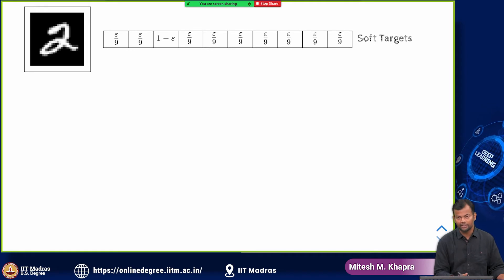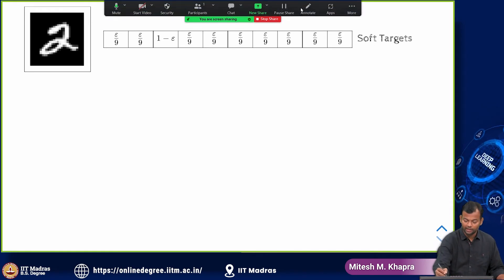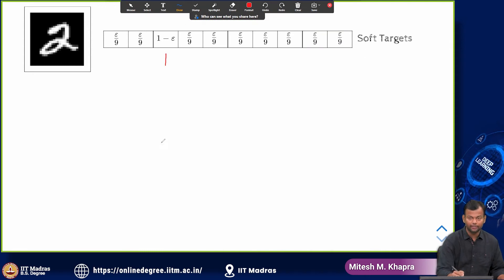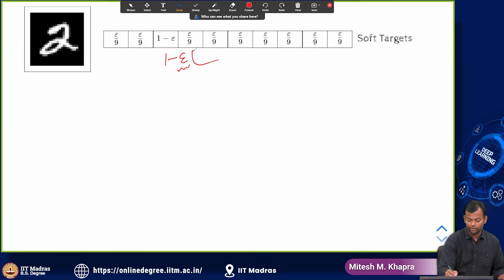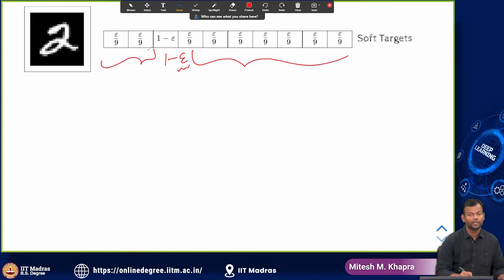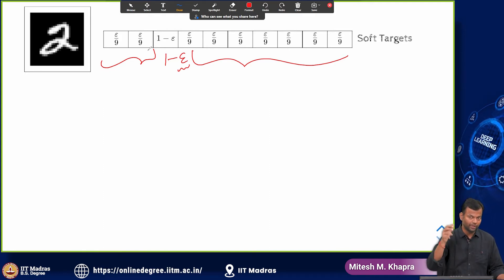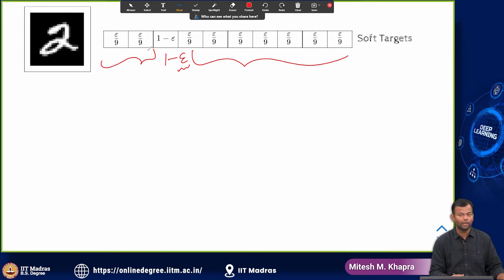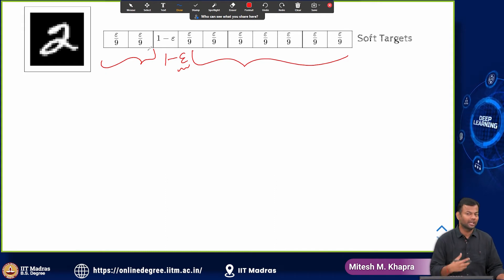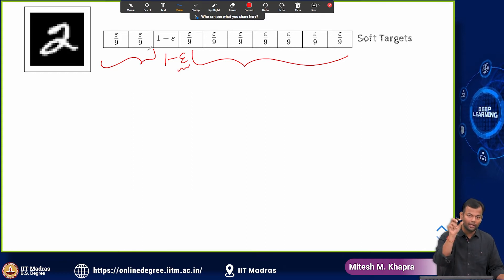What I am going to do is that in my original distribution, all my probability mass was on the correct label. I am going to take away a small probability mass from there and distribute it to the other labels. Now instead of all the mass being on 1 and everything else being 0, instead of using those hard targets, now I am using the soft targets where there is a small non-zero probability for all the other outputs also. So I have corrupted the output in some sense, but not corrupted it by a lot. Because still if epsilon is small and epsilon will be small, my majority of the probability mass is still on the correct label.